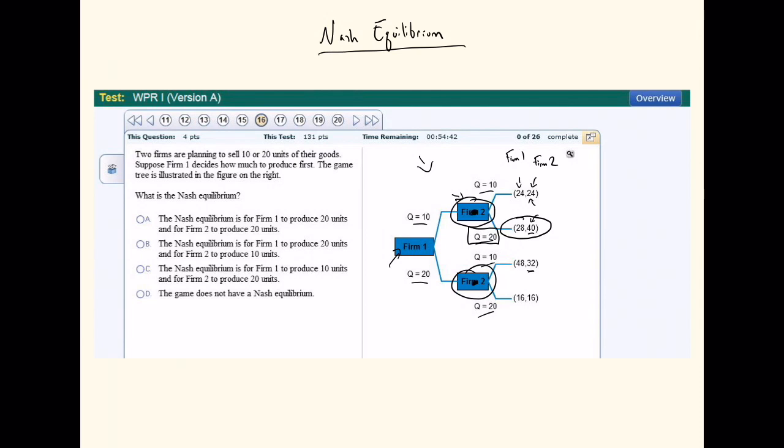Now what's firm two going to do if they're at this node? Well, if they're at this bottom node, they're going to be comparing 32 and 16. 32 is greater than 16, so they're definitely going to pick this option. Therefore, they're going to choose to produce a quantity of 10 if they're at this bottom node.